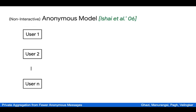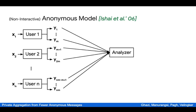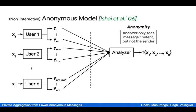In this model, there are n users and there is the analyzer or the server. Each user i receives an input x_i. Using this input and possibly their own private randomness, each user produces potentially multiple messages. Here we use m to denote the number of messages produced per user. These messages are then sent to the analyzer, who would like to compute some function f on the inputs x_1 to x_n.